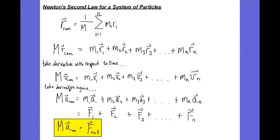And if we take the derivative again, all the velocity vectors become acceleration vectors. And if I look at each particle individually, mass times acceleration, we know by Newton's second law is force, so the mass of the first particle times its acceleration is equal to the force acting on particle number 1, and so on for all the other particles.